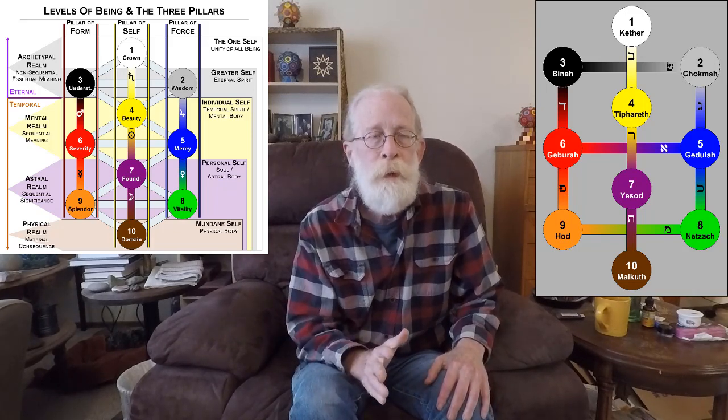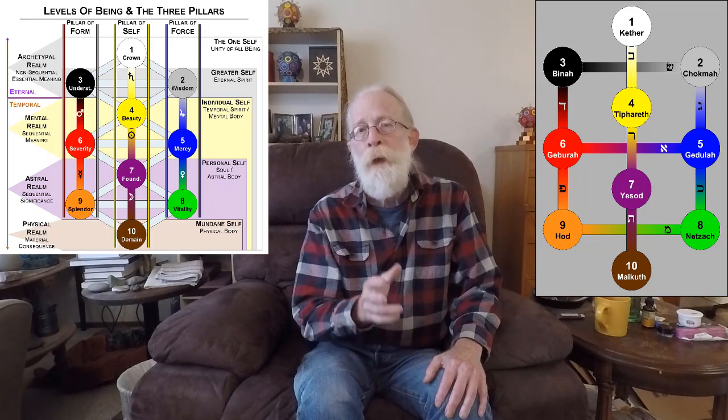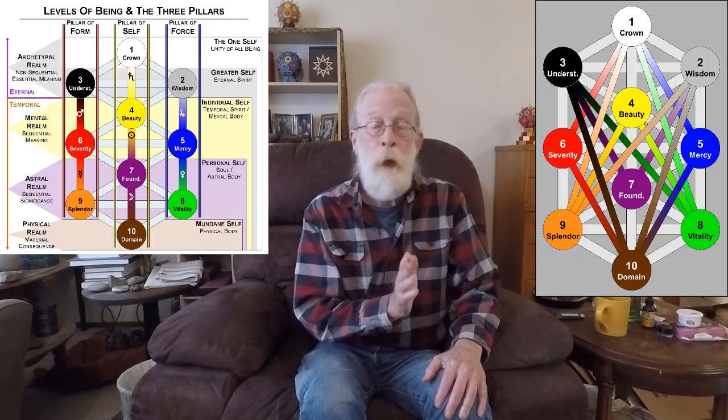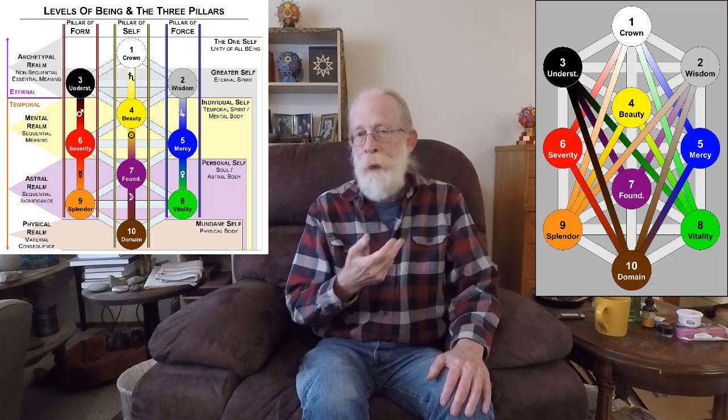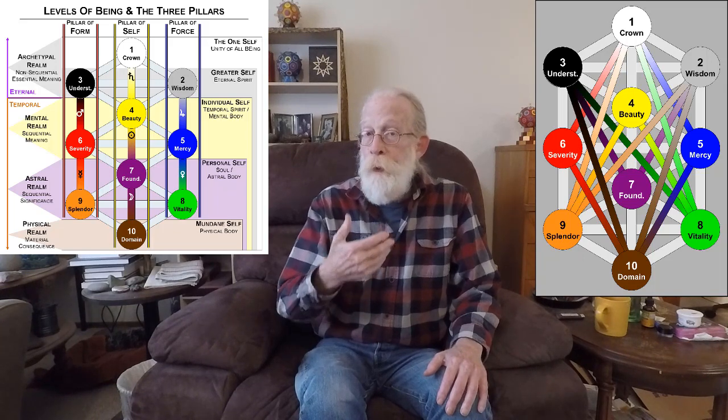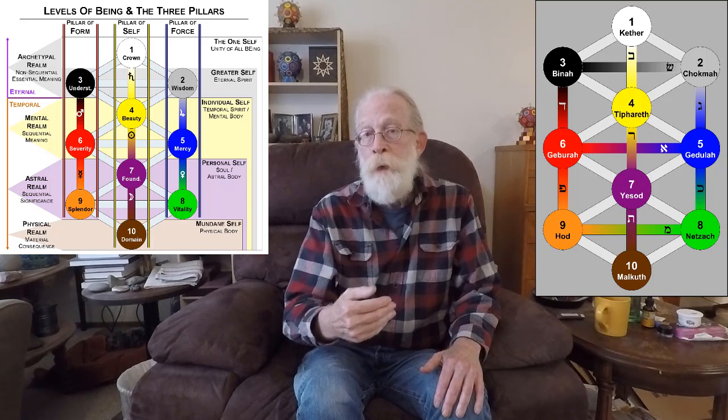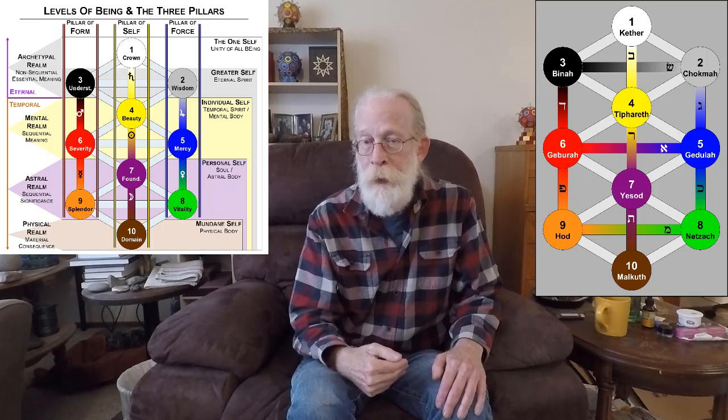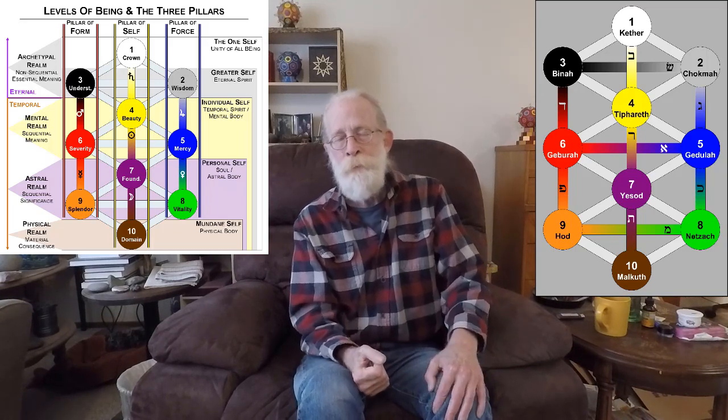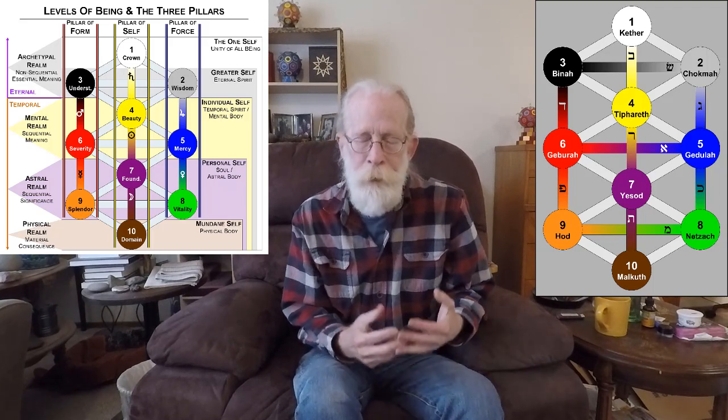The planetary paths cross all three of the mothers, and it's the paths of self, the descending self that cross the mother letters. Now, a crossing of paths is important. It occurs only here and then only in the hidden paths.